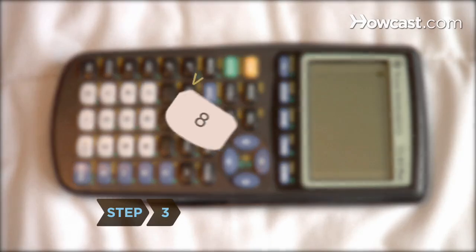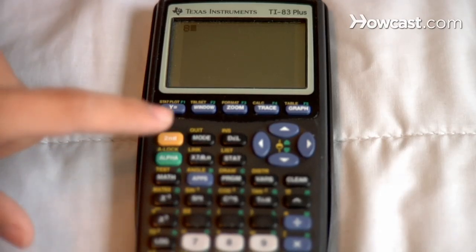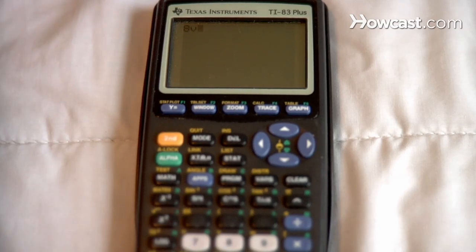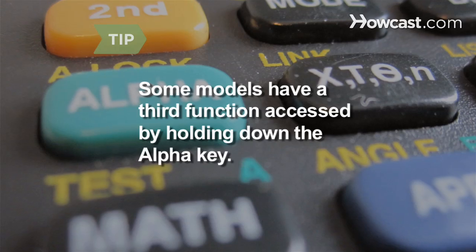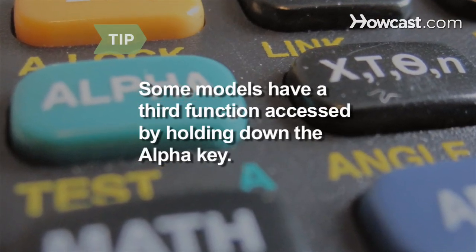Step 3: Use the multiple functions of the buttons. Press a button to use the function written on the button, and hold the second key while pressing a button to use the function written above the button. Some graphing calculators also have a third function that can be accessed by holding down the alpha key while pressing the button.